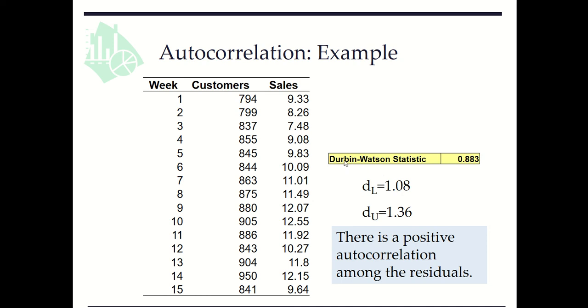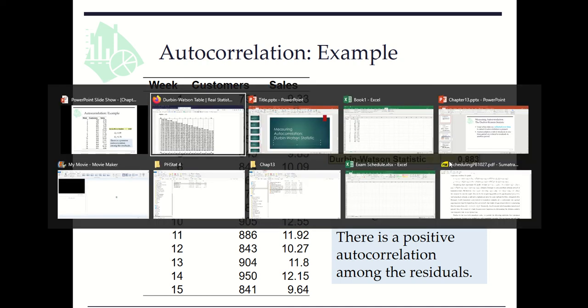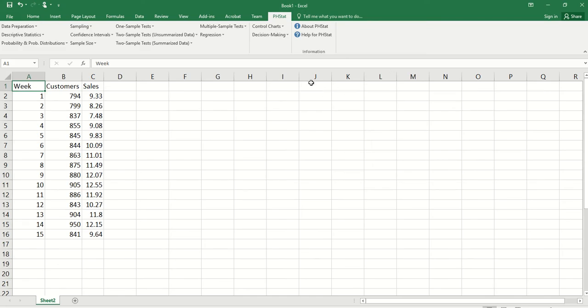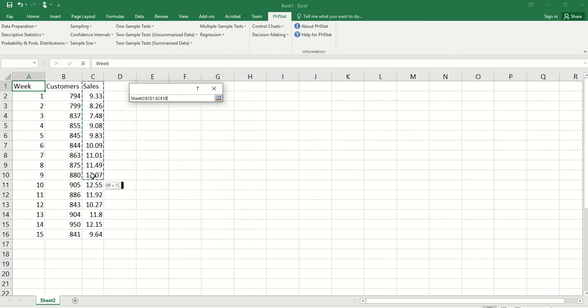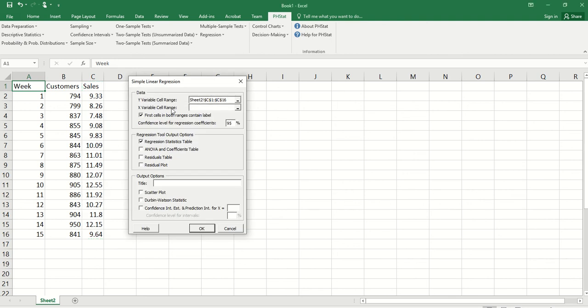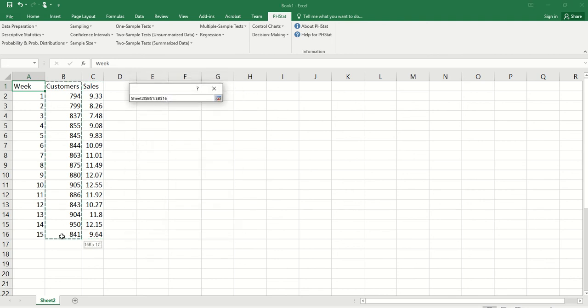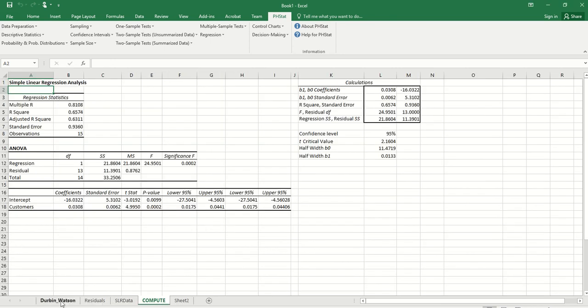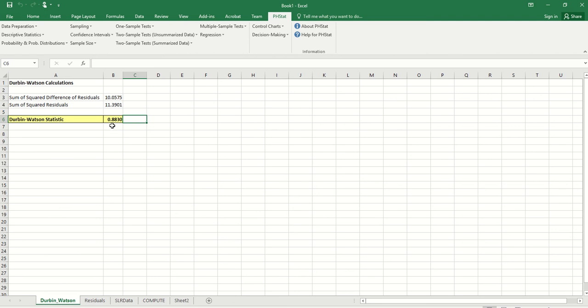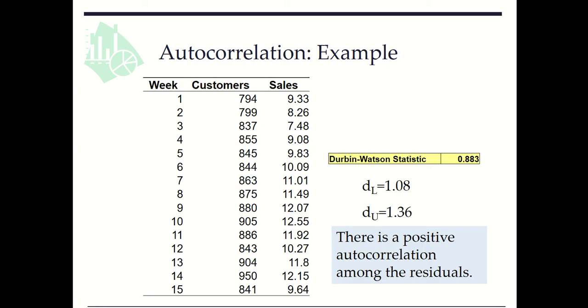Now we see how to find this D statistic from PHStat. We go to Regression, Simple Linear Regression. Y variable cell range: we use Sales, C1 through C16. X variable cell range: B1 through B16. We need some output results, so we check ANOVA and coefficient tables, and then we check Durbin-Watson statistic. We click OK. Then we see the Durbin-Watson statistic here.